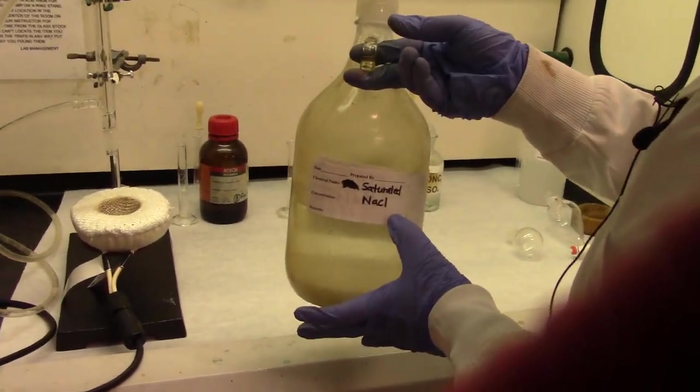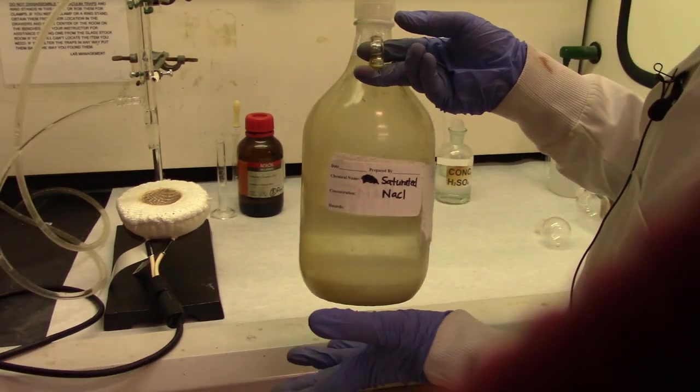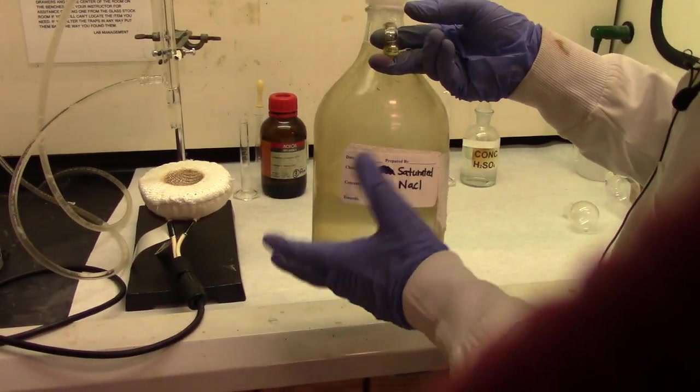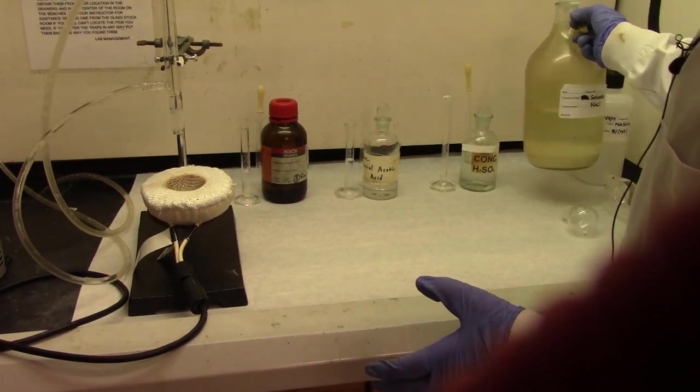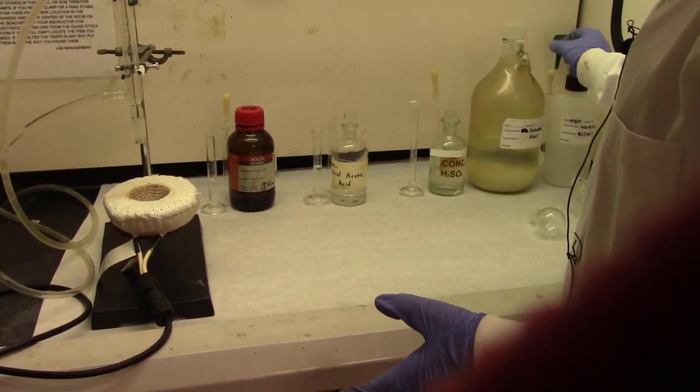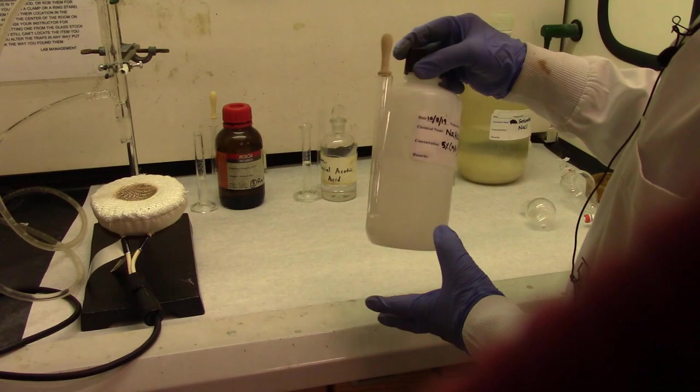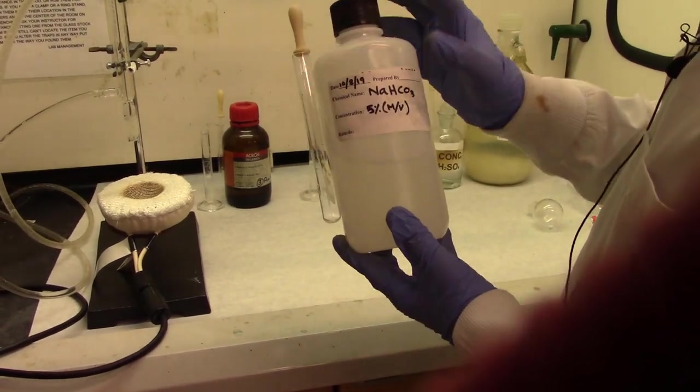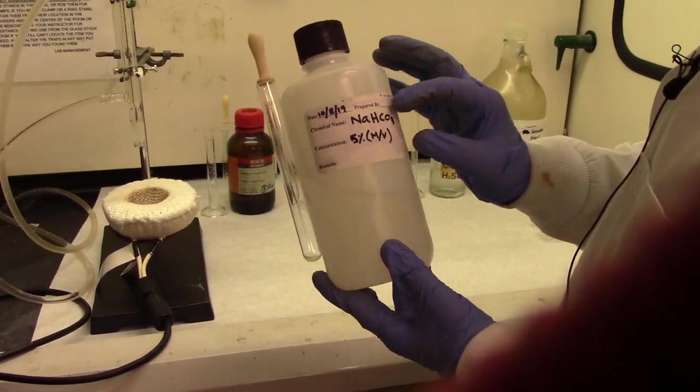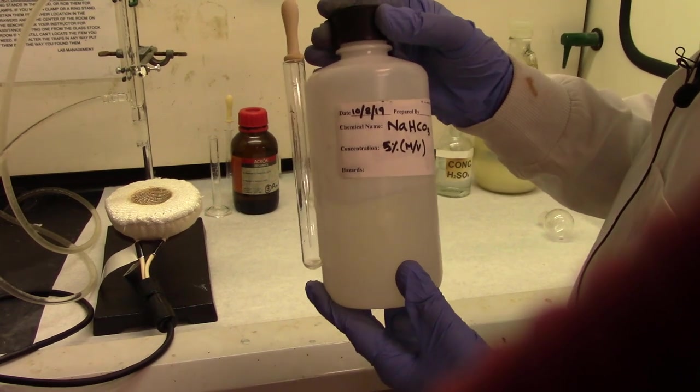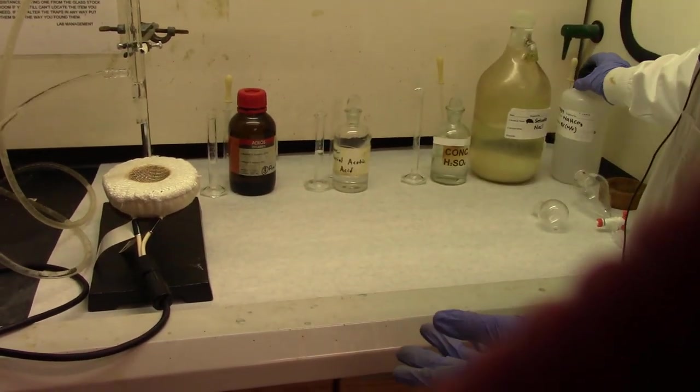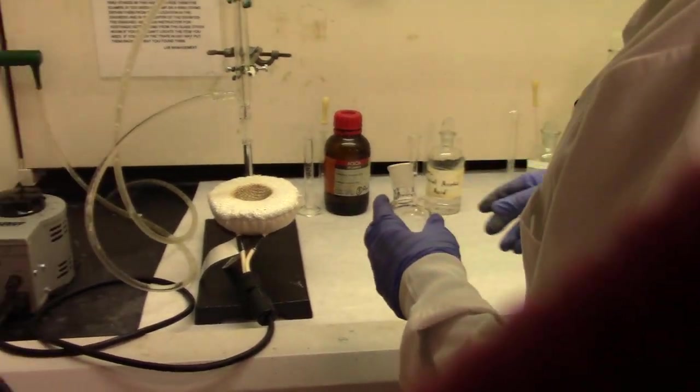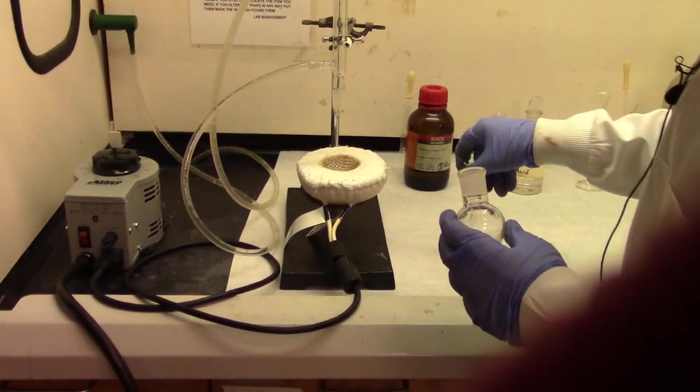During the workup, workup means that you have completed the reaction and now you are trying to isolate your desired product, you need saturated sodium chloride. Sodium chloride is also called brine in chemistry and biology. This is baking soda, sodium bicarbonate. This is a mild base. This will be neutralizing acetic acid and sulfuric acid later on after the reaction.